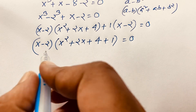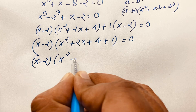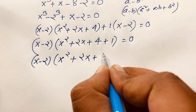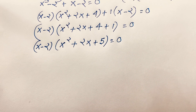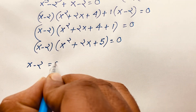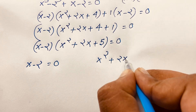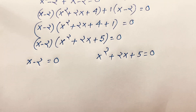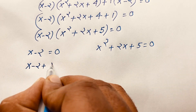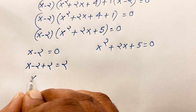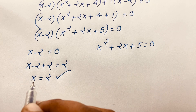There are two cases. The first case is x minus 2 equals 0, and the second case is x squared plus 2x plus 5 equals 0. For the first case, adding 2 to both sides gives x is equal to 2. So our first final answer is x equals 2.